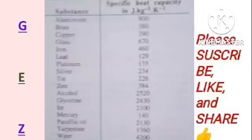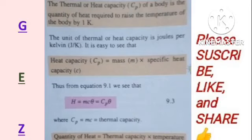There are other terminologies related to heat and temperature. For example, we have the thermal or heat capacity, which is the quantity of heat required to raise the temperature of a body by 1 Kelvin. When we talk about heat capacity, it doesn't require us to talk about the mass of that body — all we need to know is the quantity of heat required to raise the temperature of any body by 1 Kelvin.